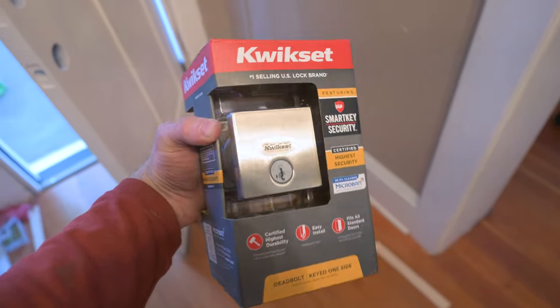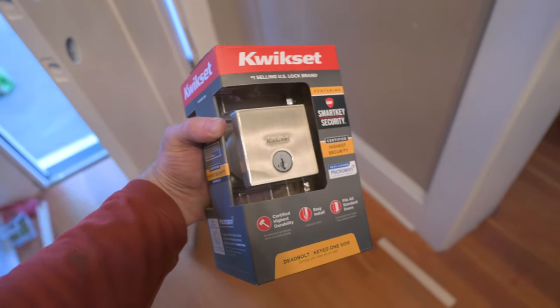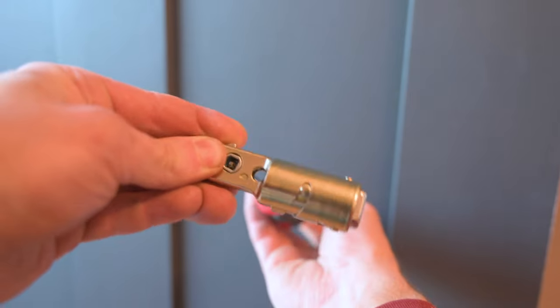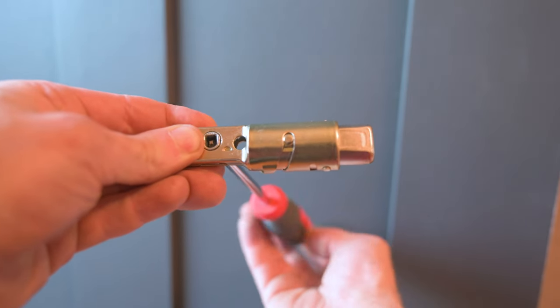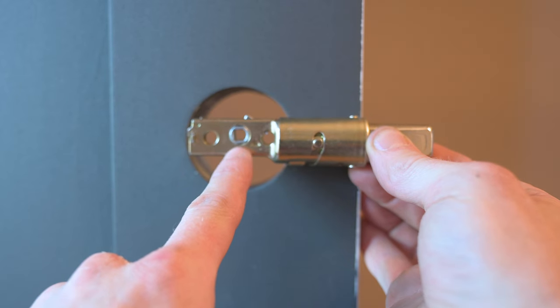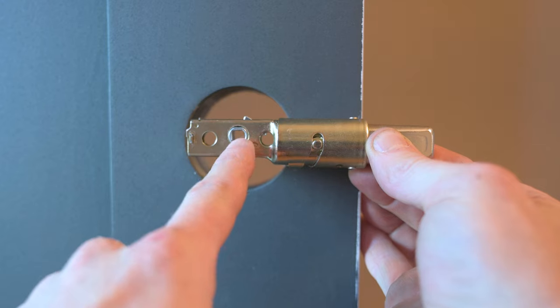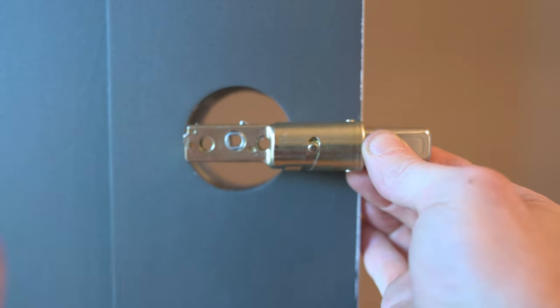This is the downtown model deadbolt I bought from Kwikset. This is our latch bolt, and the first step is to extend it using a screwdriver. So here we want to see that this D-shaped hole is centered in the hole of the door, and it is.